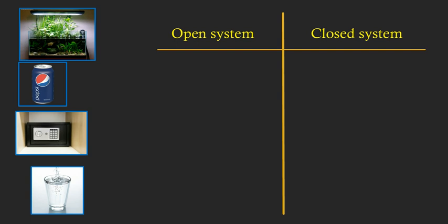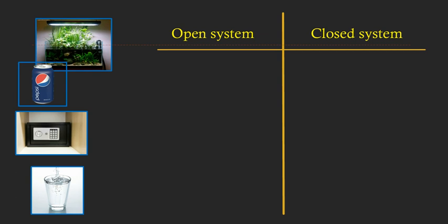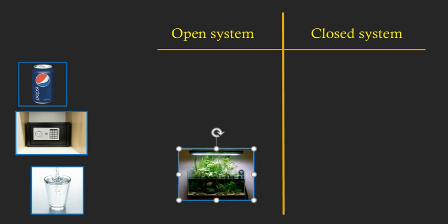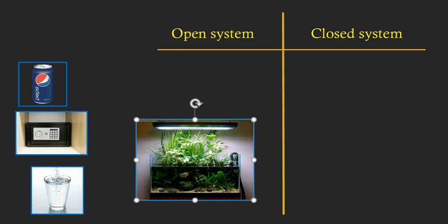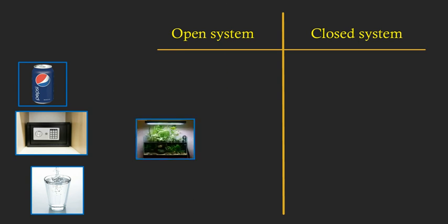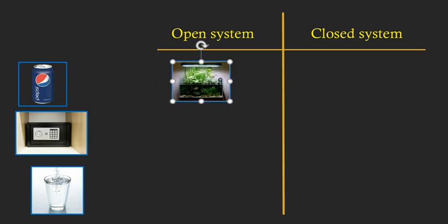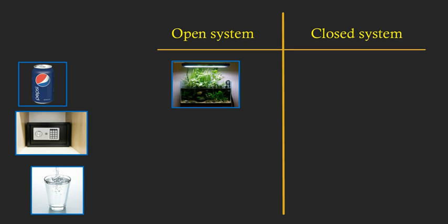So here, the first example would be this aquarium. Now looking at the aquarium, let me make this a little bit larger. You can see we have the light and there's no lid and these plants are growing out. Now, which would you consider this, an open system or a closed system? Well, because the aquarium is open and items can freely leave and enter that aquarium, it would be an open system.